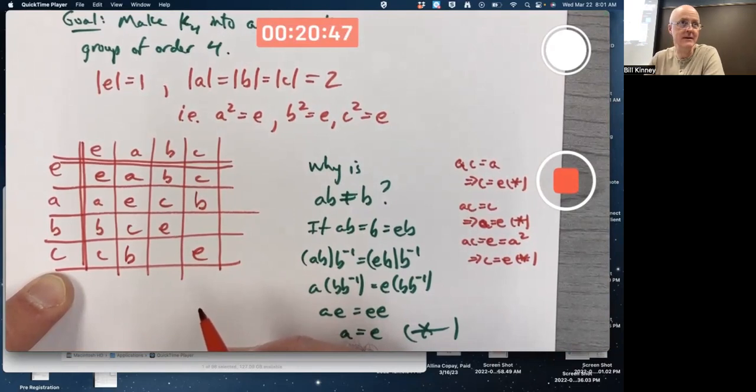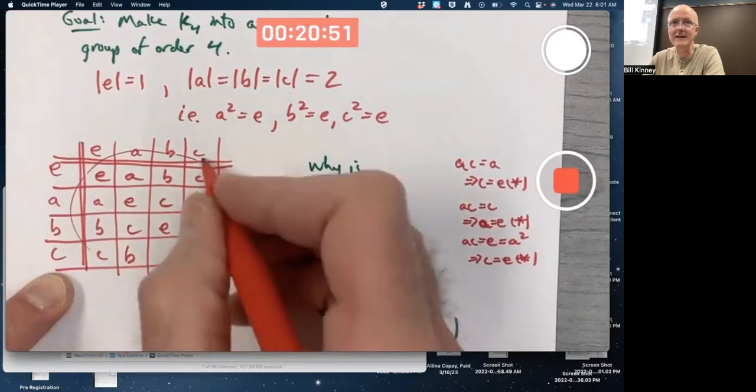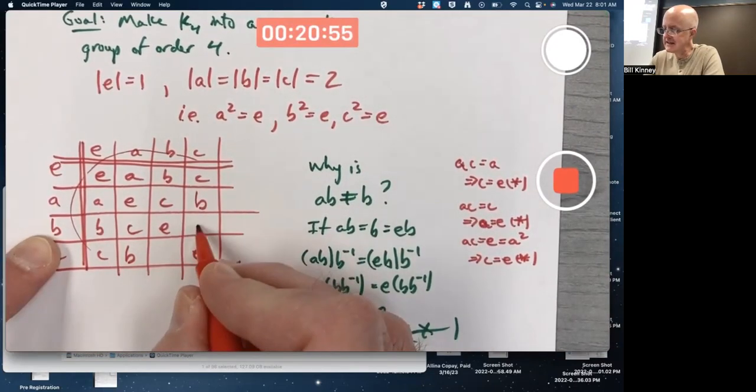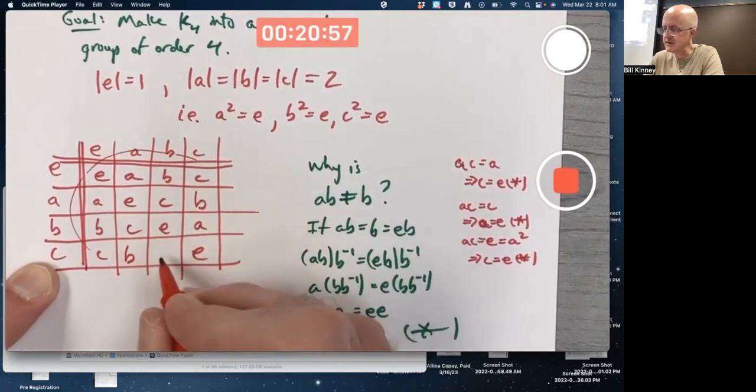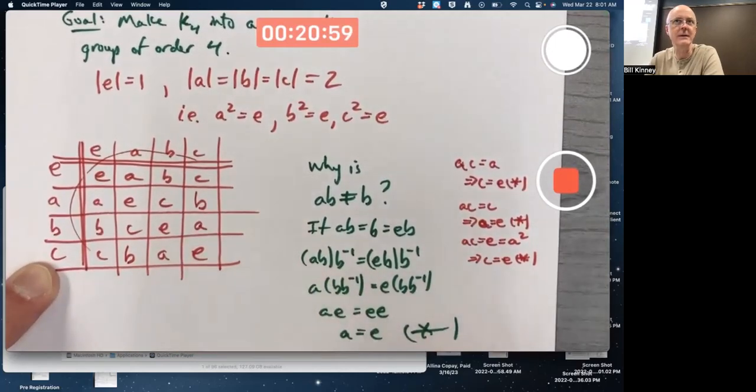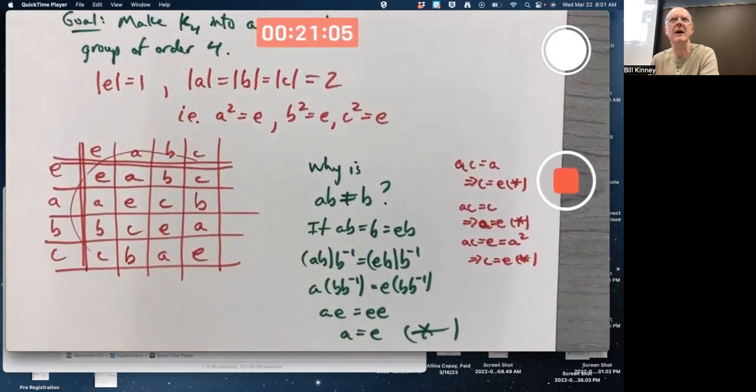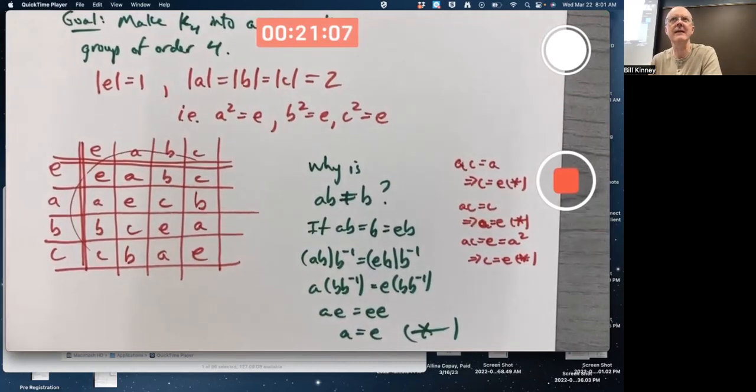Hmm, this group seems like it's probably abelian. All right, this matrix here is symmetric. Yeah, and what's left over? B times C has to equal A, and C times B also has to equal A for the same kinds of arguments.